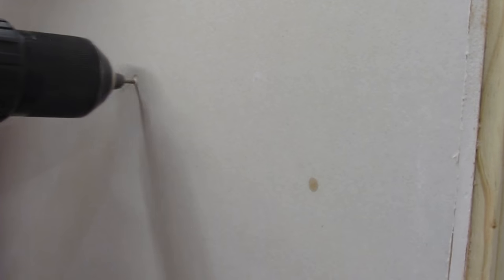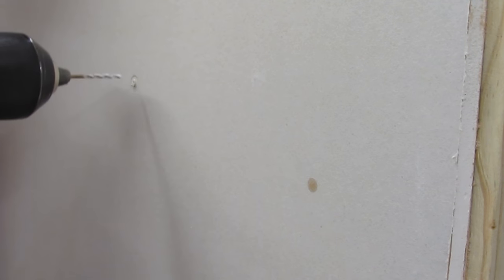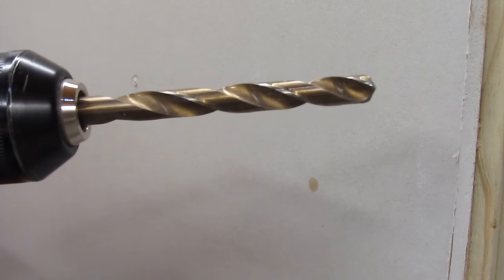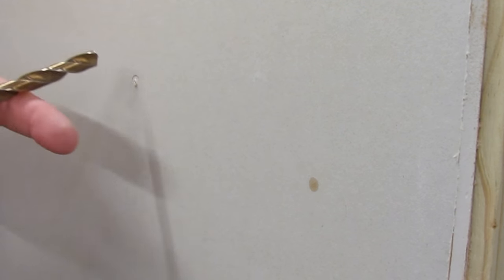I get no resistance at all past that first half inch, so I know there's not a stud there. My 1/8 inch toggle bolt package tells me I need a 3/8 inch drill bit, so I'm gonna take my 3/8 bit and I'm gonna follow up right where this test hole was, and I'm gonna drill a 3/8 hole.